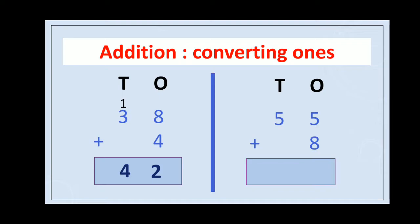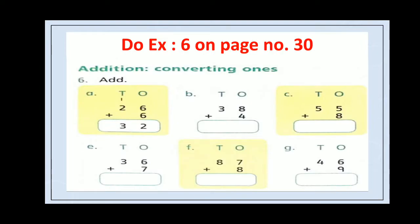Now another example: 55 plus 8. We add ones first. 5 plus 8 is equal to 13, which means 1 ten and 3 ones. So we write 3 in the ones column and 1 ten carries into the tens column. Now add tens: 5 plus 1 is equal to 6. The answer is 63.